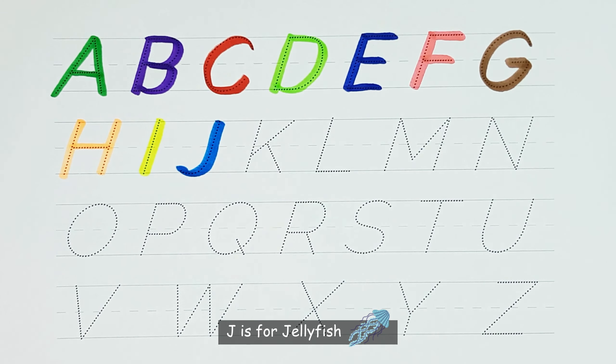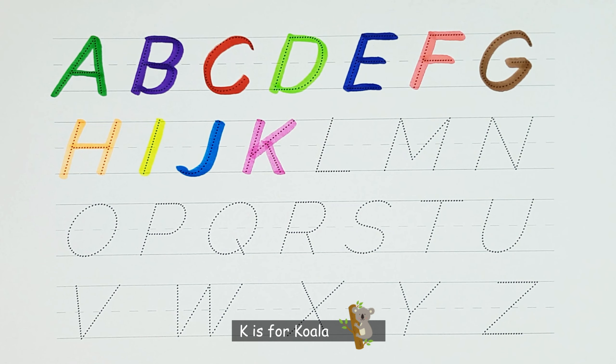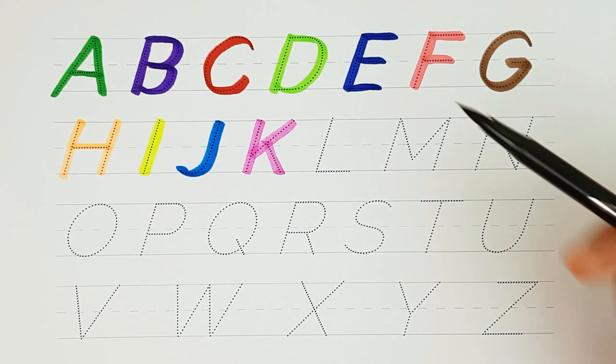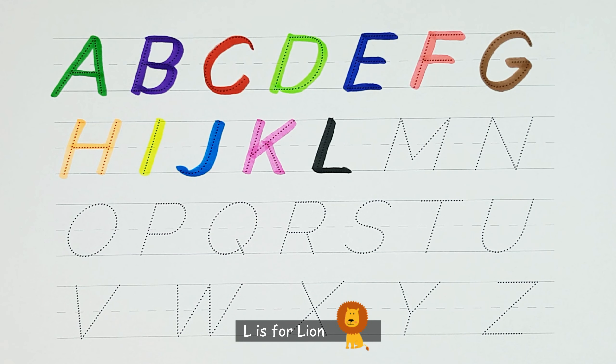J. J is for jellyfish. K. K is for koala. L. L is for lion.